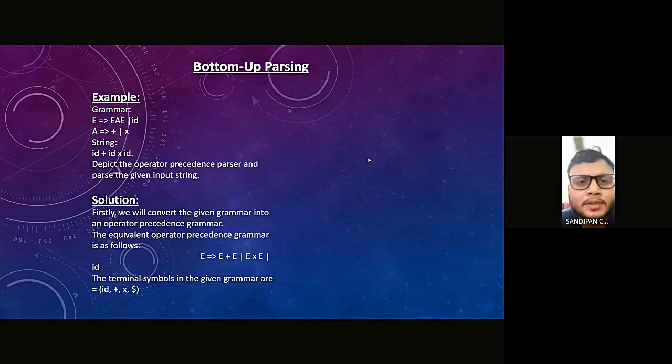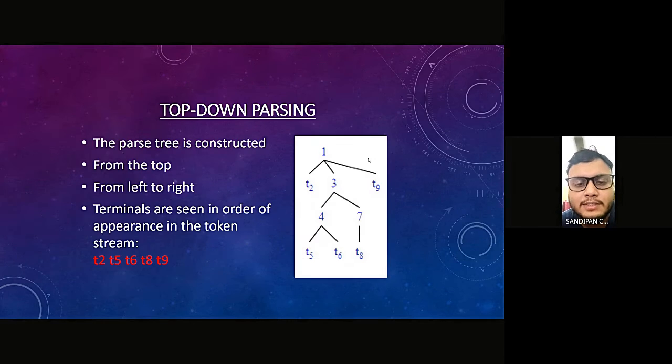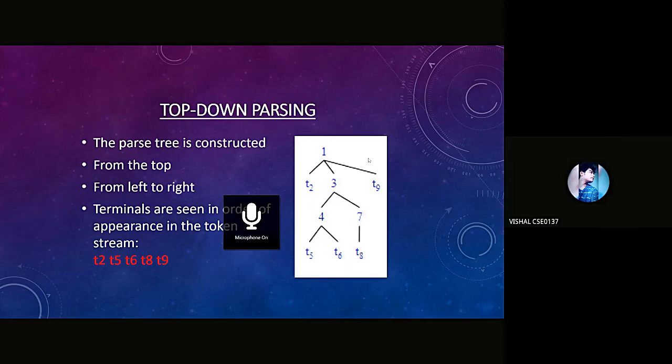My topic is bottom-up parsing. This example depicts the operator precedence parser for the given input string. First, we will convert the given grammar into an operator precedence grammar. The equivalent grammar is: E → E + E and E → E * E and E → id. The terminal symbols in the given grammar are: id, plus, multiplication, and dollar.